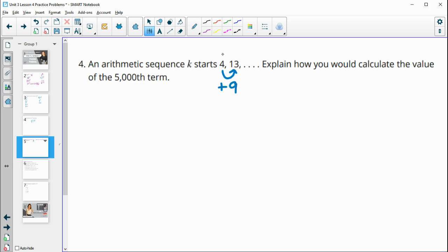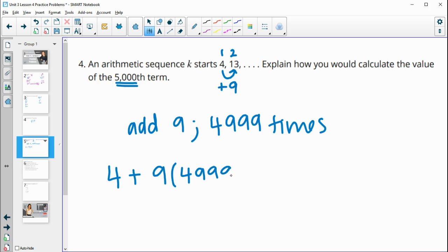So four is our first term. So we add nine once to get to our second term. We would add it twice to get to our third. So we would need to add nine, 4,999 times to get to that 5,000th term. So we'd have to do four plus nine times 4,999 to get to that 5,000th term.